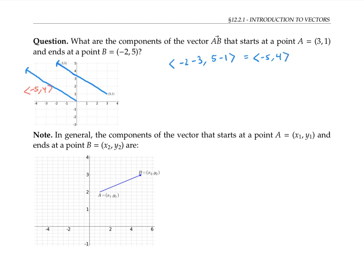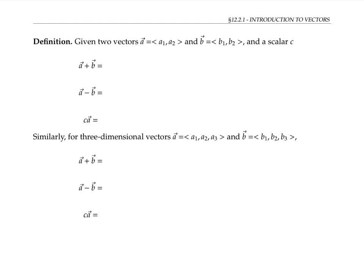In general, the components of a vector that starts at a point (x₁, y₁) and ends at a point (x₂, y₂) are ⟨x₂ − x₁, y₂ − y₁⟩. A similar statement can be made for vectors in 3D with three components. We can also talk about vector addition, subtraction, and scalar-vector multiplication algebraically in terms of components.